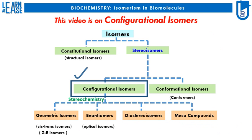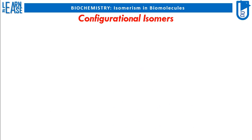Here I will give explanation on geometric isomers, enantiomers, diastereoisomers, and meso-compounds. I will also explain the concept of tautomers and tautomerization. Now I shall begin by explaining configurational isomers.